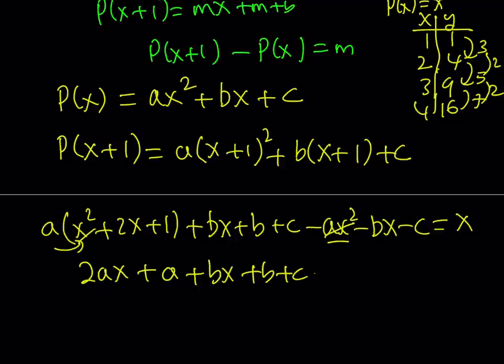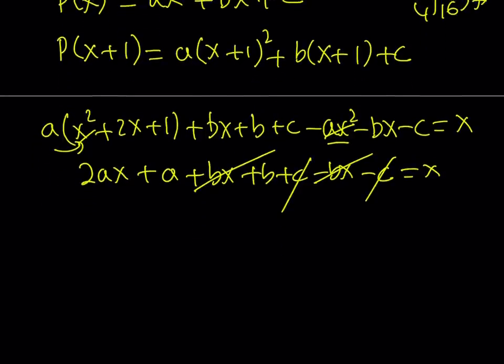So this cancels out, and then minus BX. The BX also cancels out, obviously. And the C also cancels out. A lot of things cancel out. So that's good. BX cancels out, C cancels out, and we end up with something like this: 2AX plus A plus B is equal to X.